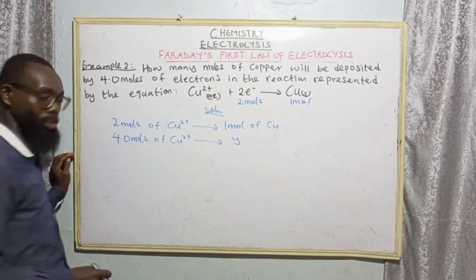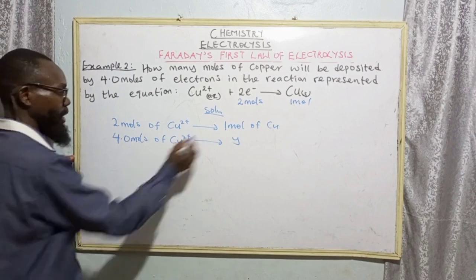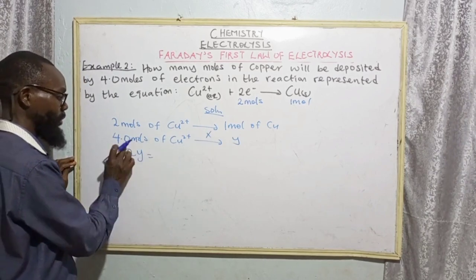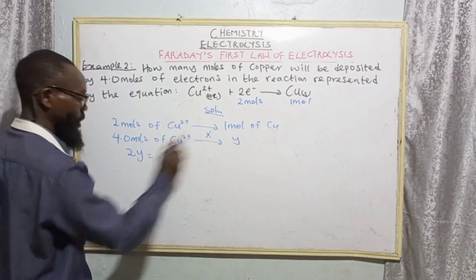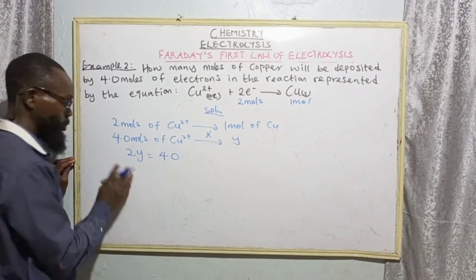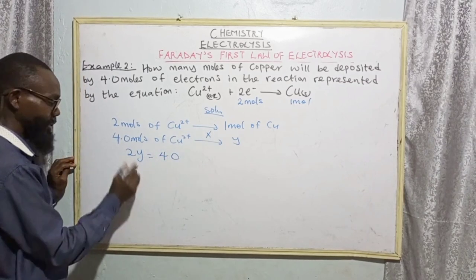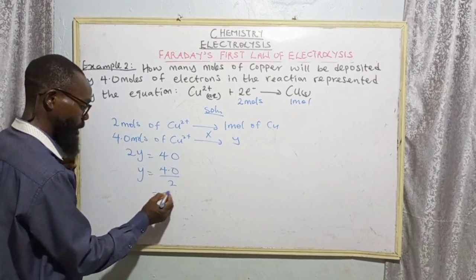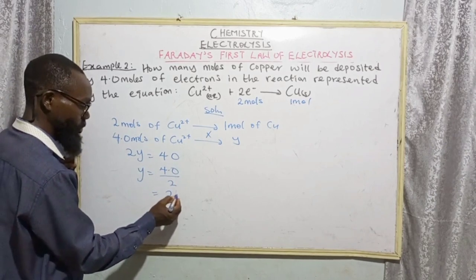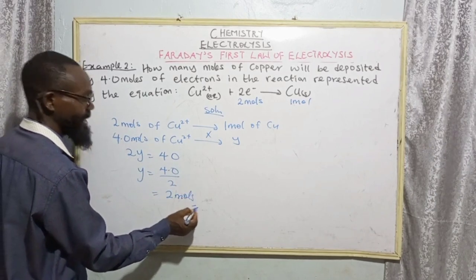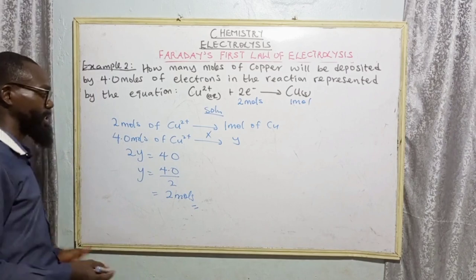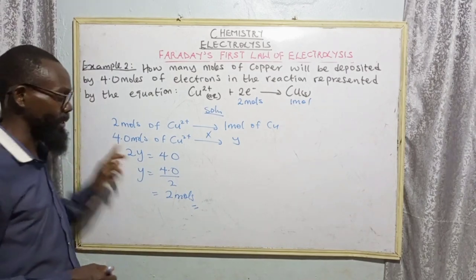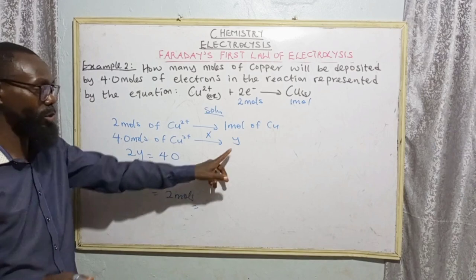We cross-multiply: 2y equals 4.0 times 1, which is 4.0. Divided by 2, y equals 4.0 divided by 2, which equals 2. So 2 moles — which means that 4 moles of electrons are required to deposit 2 moles of copper.